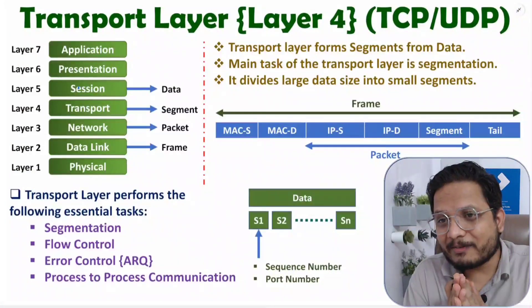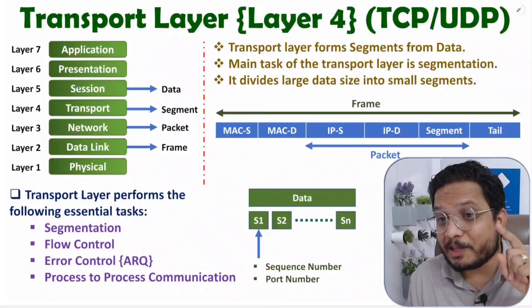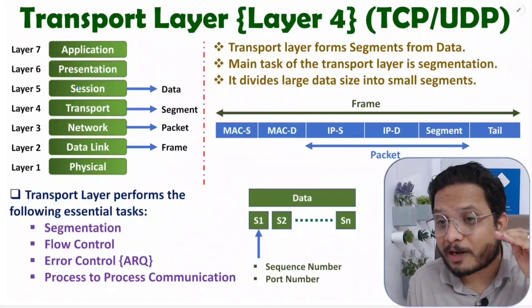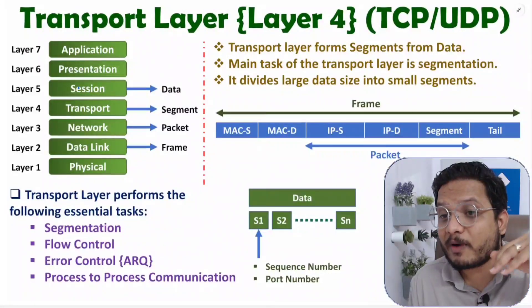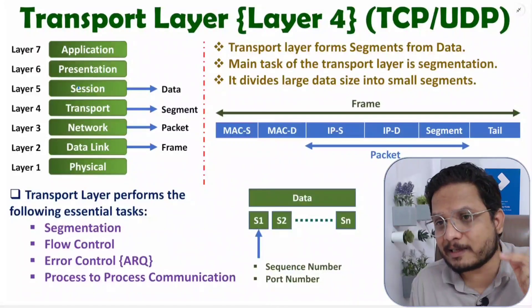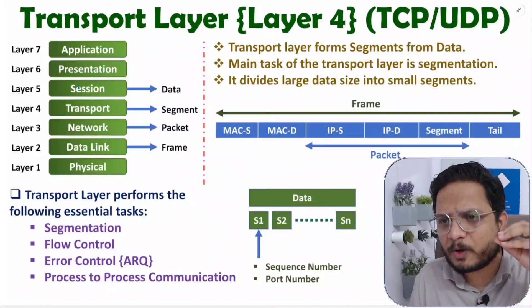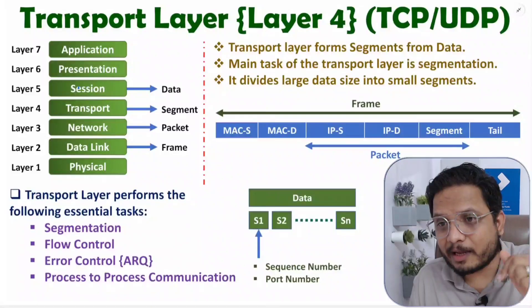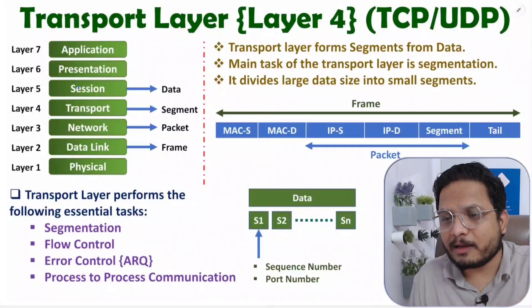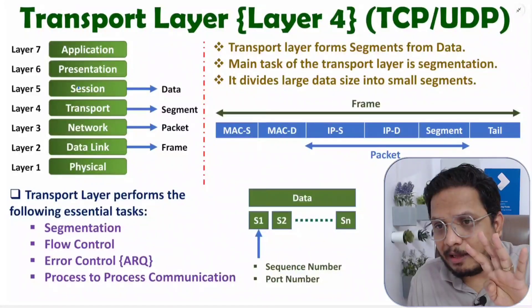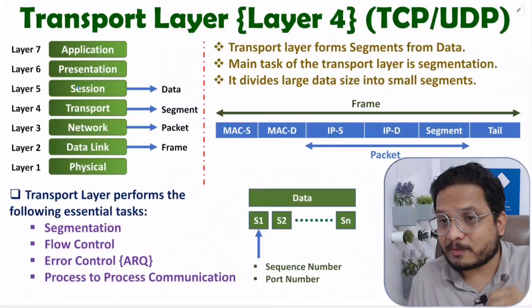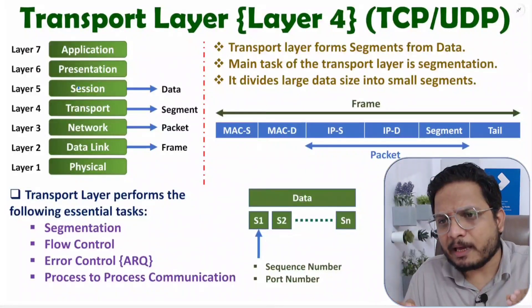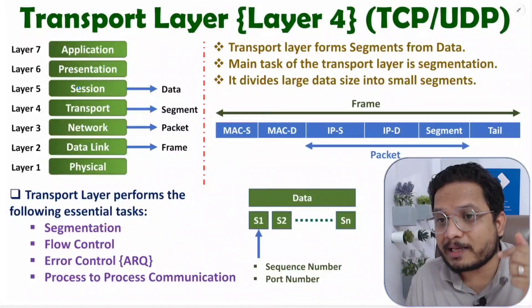Hello friends, welcome to Engineering Funda. From this video onwards, I'll be starting a new chapter on the transport layer in the computer network lecture series. Transport layer is layer number four in the OSI model, which is the reference model for computer networks, as well as layer number four in the TCP/IP model, which is widely used in computer networks.